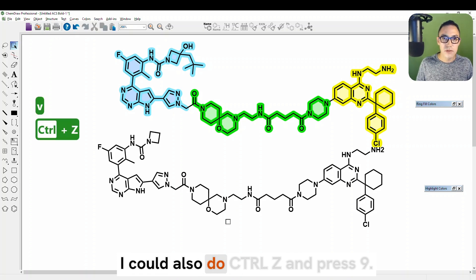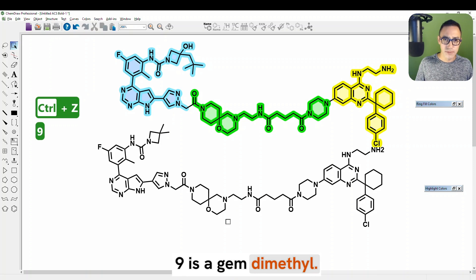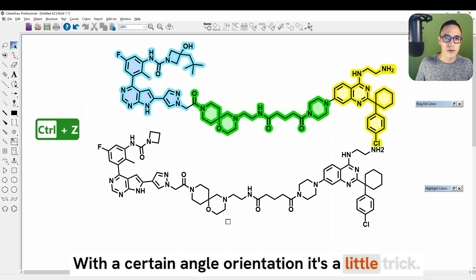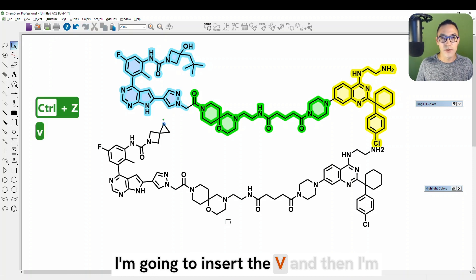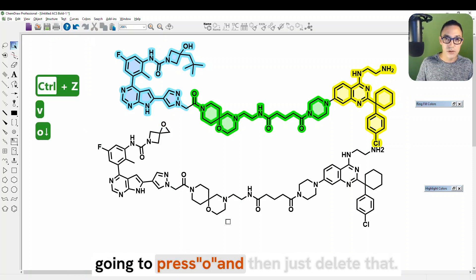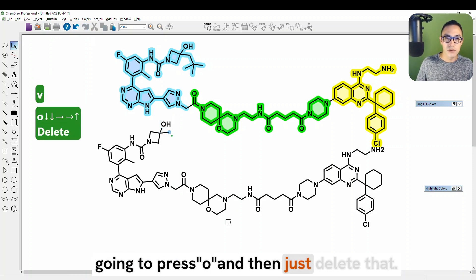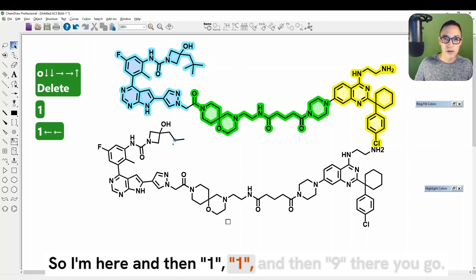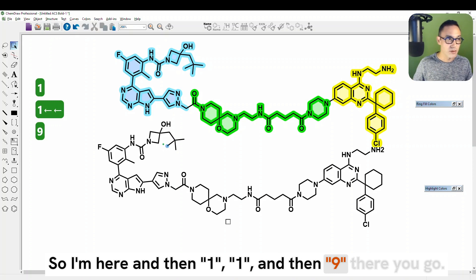I could also do CTRL-Z and press nine. Nine is a gem dimethyl with a certain angle orientation. It's a little trick. I'm going to insert the V and then I'm going to press O, and then just delete that. So I'm here, and then one, one, and then nine. There you go.